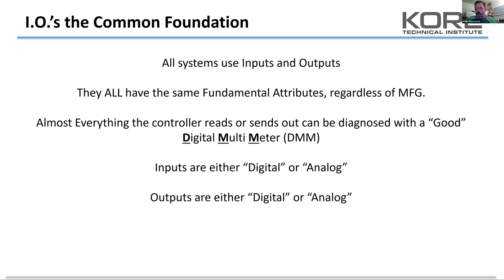I wanted to go over the fundamentals of those inputs and outputs and how the control system acts just like your digital multimeter. I qualified the digital multimeter as being a good one, because once we get into the details of higher-end sensors, thermistors, and especially network analytics, it's important that your meter be pretty accurate. You don't have to spend thousands of dollars, but a good quality Fluke or Fieldpiece meter with a good resistance scale is important.